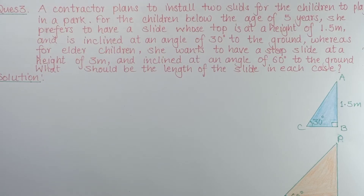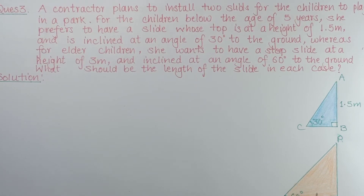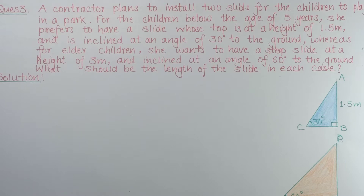Question 3. A contractor plans to install two slides for children to play in a park. For children below the age of 5 years, she prefers a slide whose top is at a height of 1.5 meters and is inclined at an angle of 30 degrees to the ground. For older children, she wants a steep slide at a height of 3 meters inclined at an angle of 60 degrees to the ground. What should be the length of the slide in each case?